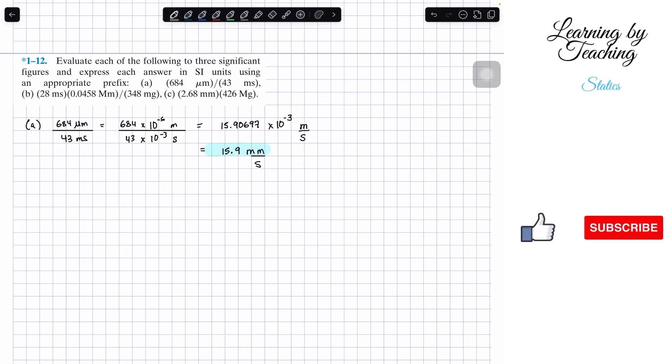Let's go ahead and do problem B. We have 28 milliseconds all multiplied by 0.0458 megameters, and all of that is going to be divided by 348 milligrams. Just as before, let's start by converting all these prefixes into the exponential form.